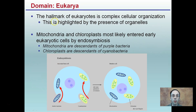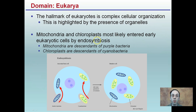The hallmark of eukaryotes is complex cellular organization, highlighted by the presence of organelles. Mitochondria and chloroplasts most likely entered early eukaryotic cells through the process of endosymbiosis. Mitochondria are descendants of purple bacteria, and chloroplasts are descendants of cyanobacteria.